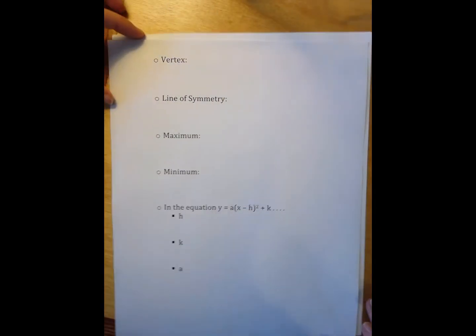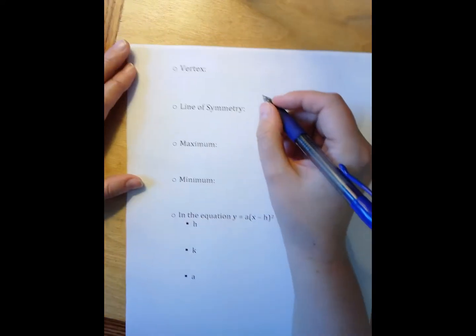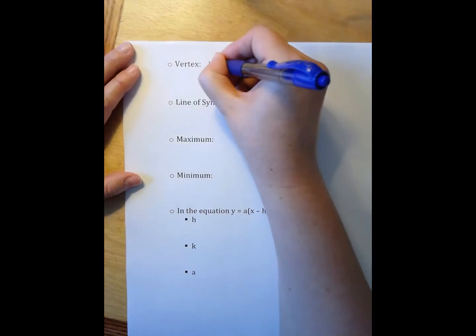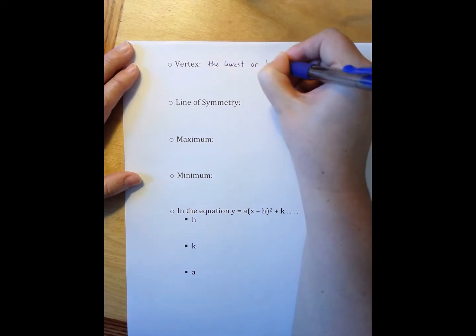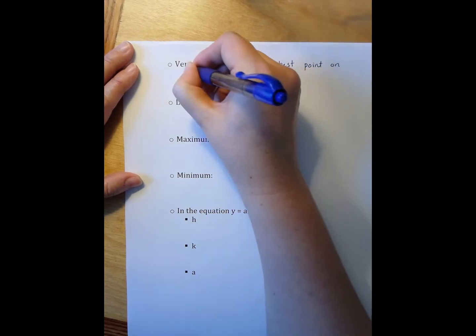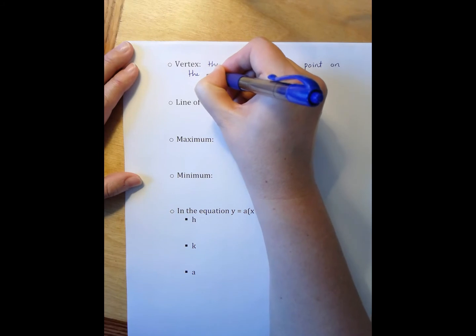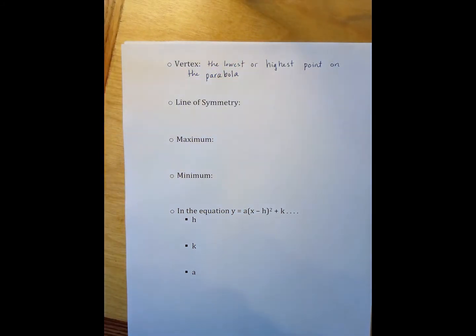One of these features is the vertex. The vertex is the lowest or highest point on the parabola. Because parabolas are U shaped, it means they always have a top or bottom. And so the vertex is the name we give to that top or bottom.